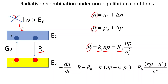We can also write the recombination rate as the equilibrium recombination rate times the product NP divided by ni-squared. Since the product NP will be larger than ni-squared, R will be larger than R0 until all photo-generated charge carriers recombine and we return to the thermally equilibrium state. The net recombination rate is the difference: Kr times (NP minus N0·P0).